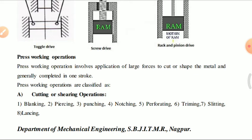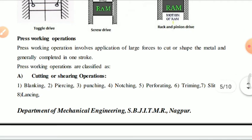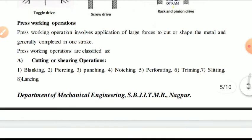Press working operations: there are mainly two types — cutting operations, in which we cut the metal, and forming operations, in which we change the shape without cutting. Press working involves application of large force to cut or shape the metal and is generally completed in one stroke. A stroke means one up-and-down motion.